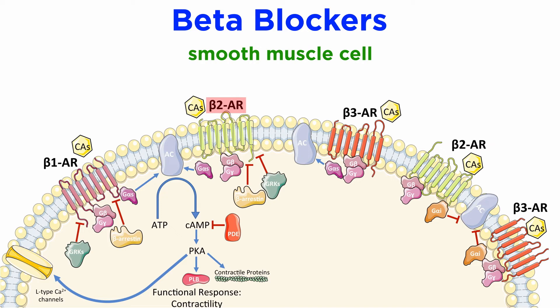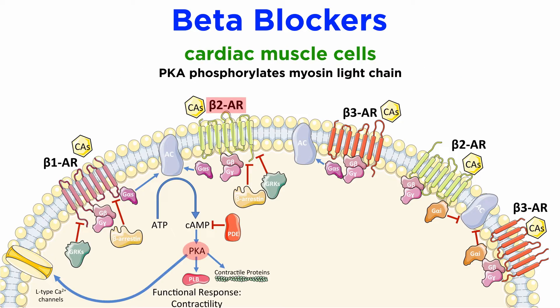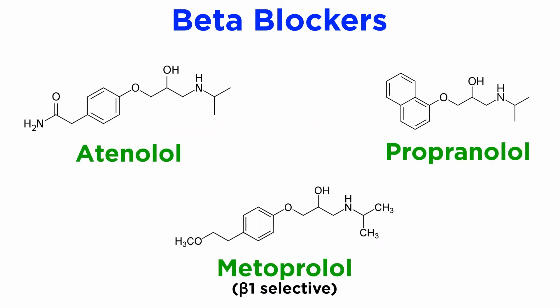It's worth noting that activation of beta-2 adrenoceptors on smooth muscle causes relaxation, due to smooth muscle cells expressing myosin light chain kinase, which reduces contractility. Whereas in cardiac cells, PKA directly phosphorylates myosin light chains, which increases contractility. In general, it's important to consider the cellular context and protein signaling repertoire that different specialized cells have and how they may be regulated differently. Drugs in this class include atenolol, metoprolol, which is selective for beta-1, and propranolol, which is beta-receptor unselective.